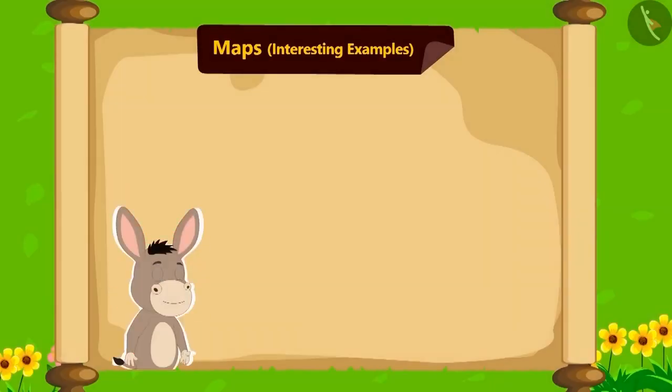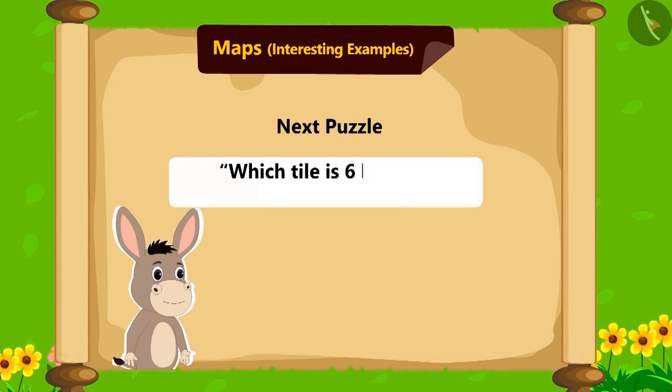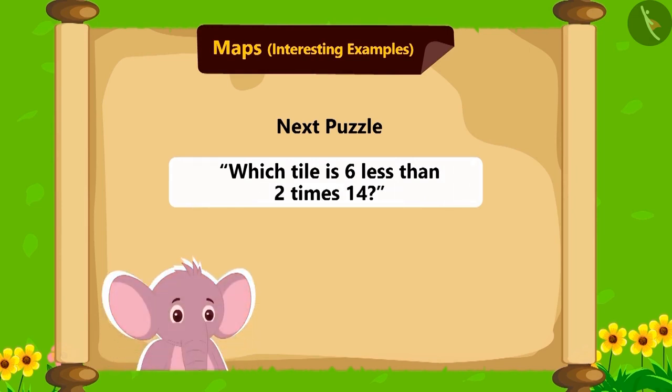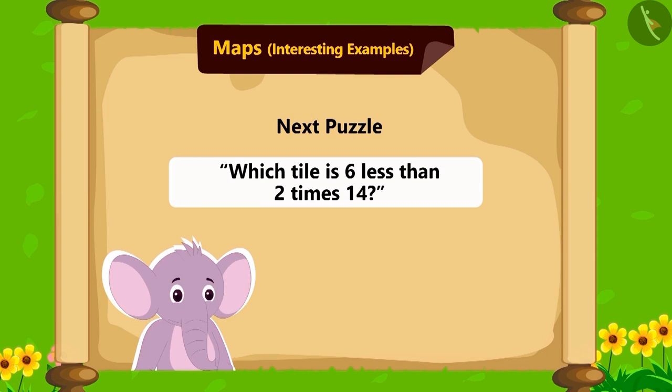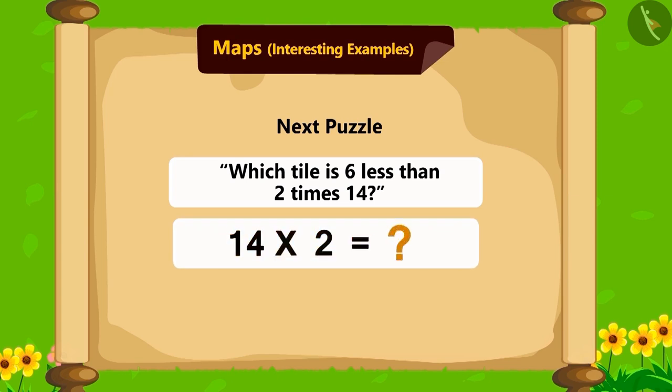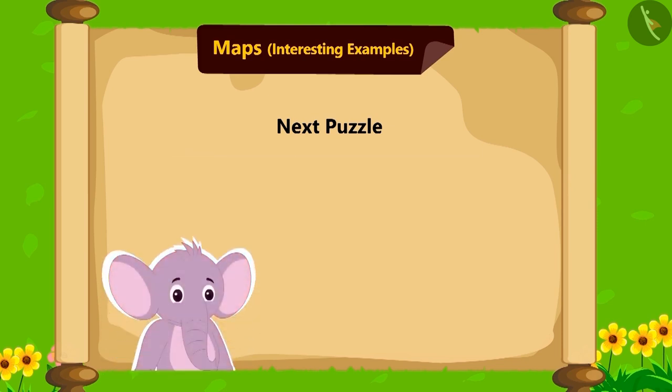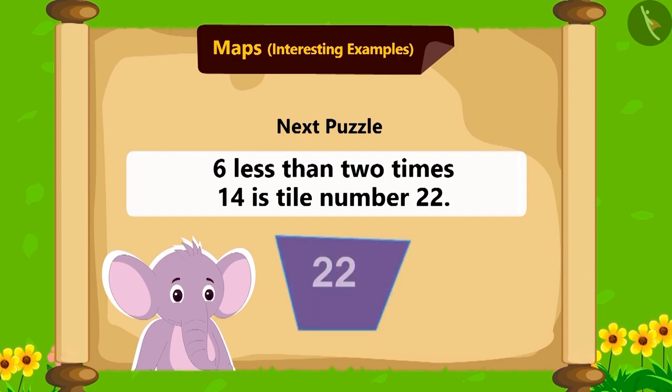Come on, children! Let's see, what is Bholla's next puzzle? Which tile is 6 less than 2 times 14? Appu became worried after hearing this puzzle. Can you solve this puzzle for Appu? If we multiply 14 with 2, what will we get? 28. Now, subtracting 6 from 28 is 22. Got Appu's answer! 6 less than 2 times 14 is tile number 22.